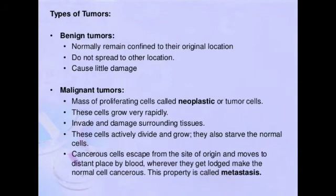There are two types of tumour: benign and malignant. A benign tumour is confined to a local area — it is limited to that area and does not do much damage. Malignant tumour damages the surrounding tissues as well; it is very rapid, causes a mass of proliferating cells, and does more damage overall.